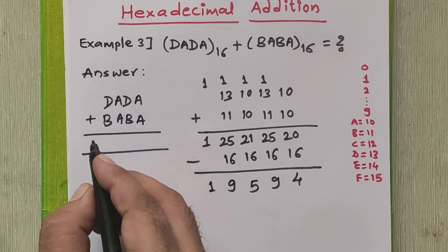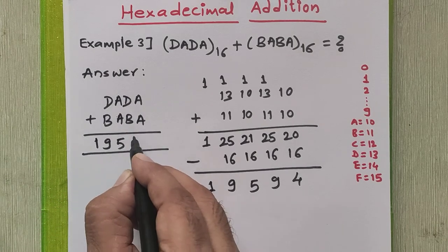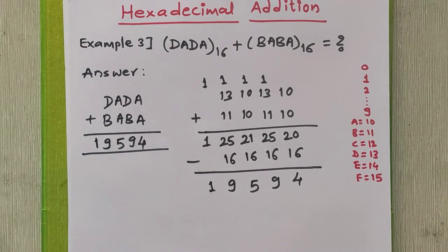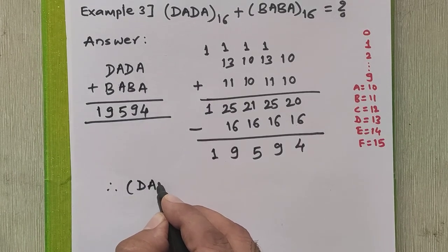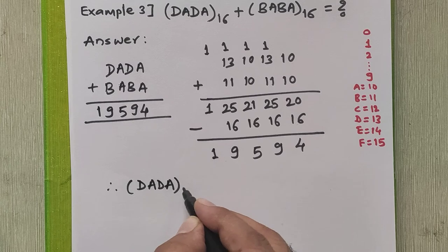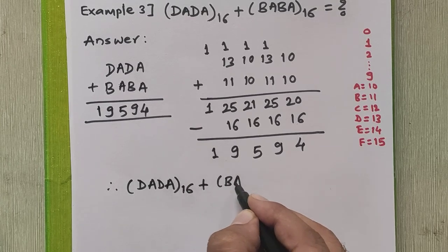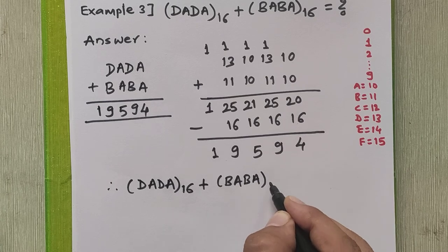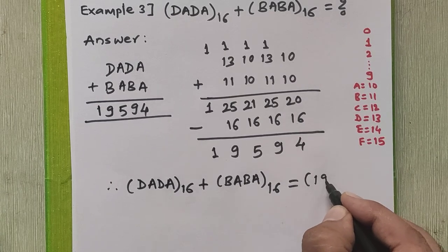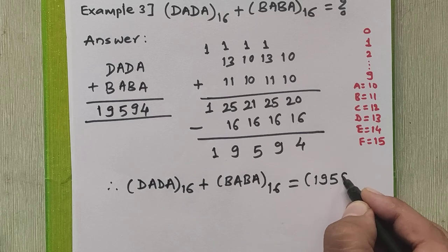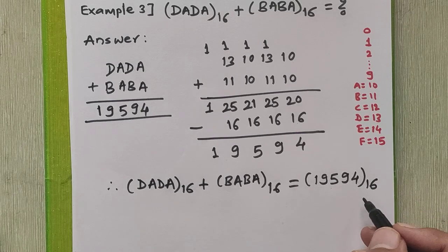This gives us our actual answer: 1, 9, 5, 9, 4. Therefore, DADA base 16 plus BABA base 16 equals 19594 base 16. This is our actual answer.